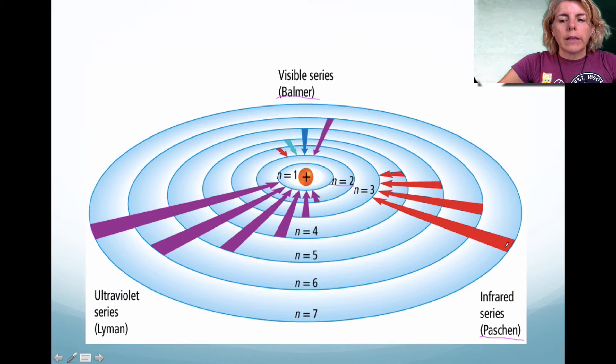Then there was another man by the name of Paschen, and he discovered when the electron went from a higher energy level down to n equals 3, it gave off infrared. And lastly, there was a man by the name of Lyman, who found when the electron went from a higher energy level down to n equals 1, it gave off ultraviolet light.